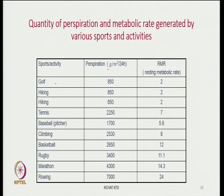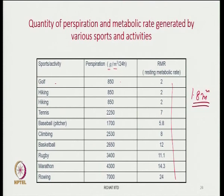Here different types of sports are listed with perspiration rates in grams per meter square per 24 hours, and resting metabolic rates are also given. A human body is generally 1.8 square meters in surface area. So we can understand roughly how much perspiration could occur for a given level of sport activity.